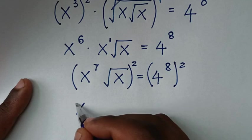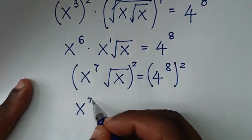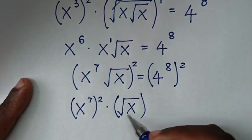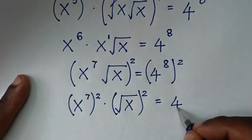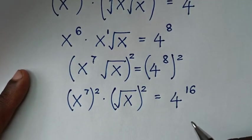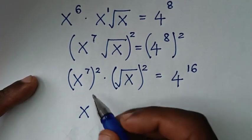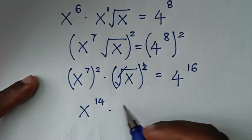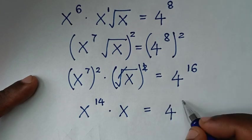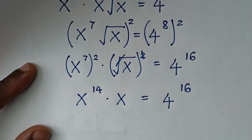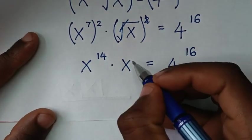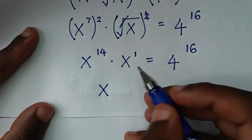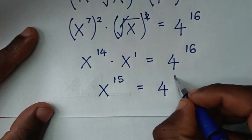We'll take this square inside the bracket, so it will be x to the power of 7, bracket squared, times square root of x, bracket squared, is equal to 4 to the power of 8 times power of 2, which is power of 16. It will be x to the power of 7 times 2, which is power of 14. Then, this x is same as x to the power of 1, so it will be x to the power of 14 plus 1 is power of 15, is equal to 4 to the power of 16.